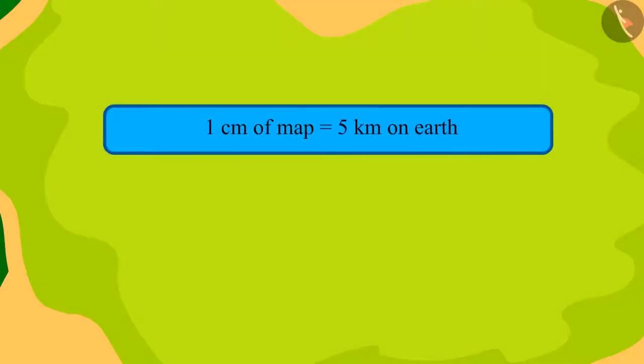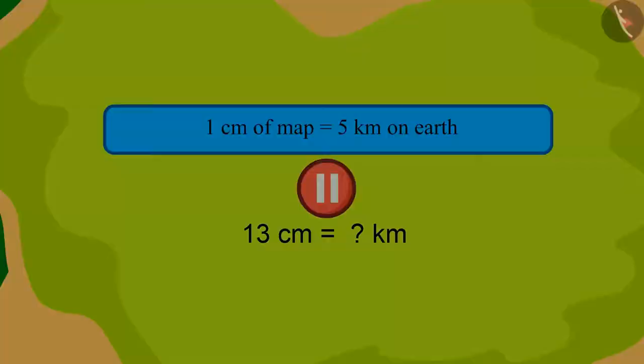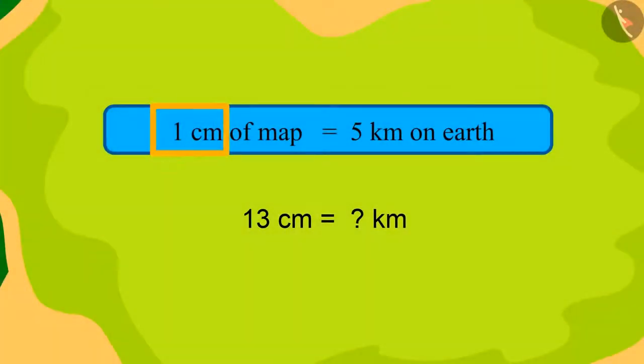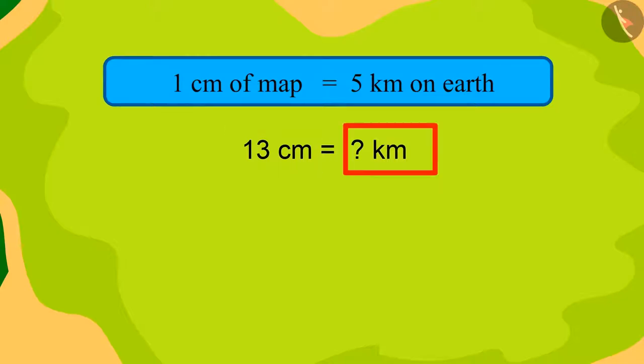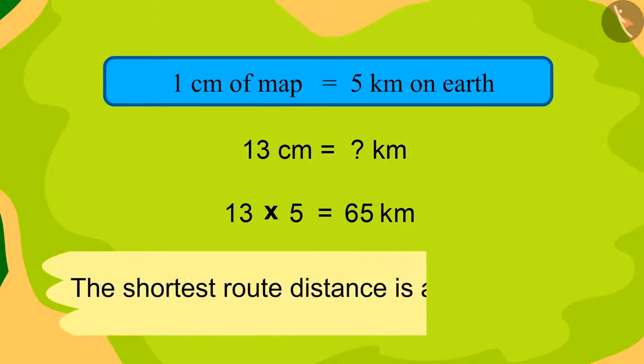Can you really tell the distance by looking at the scale written on this map? You can think by pausing the video if you want. 1 centimeter of map is equal to 5 kilometers on the earth. Therefore, how many kilometers will 13 centimeters be? 13 times 5, that is 65 kilometers. The length of the shortest route actually is 65 kilometers.